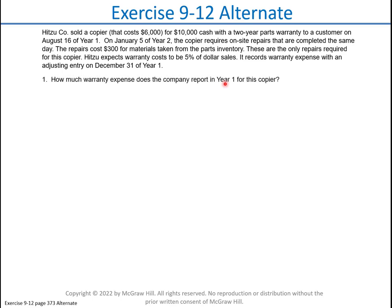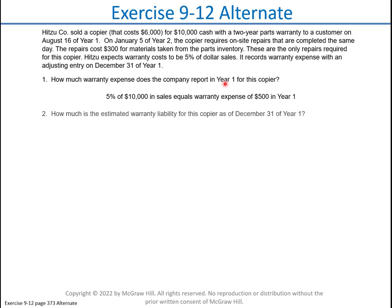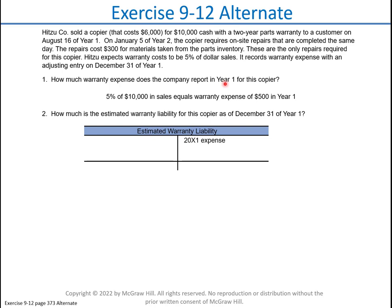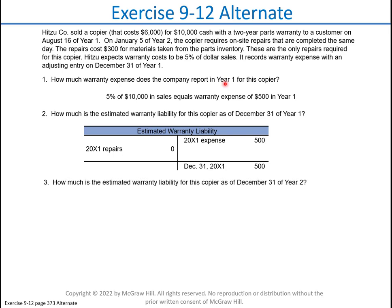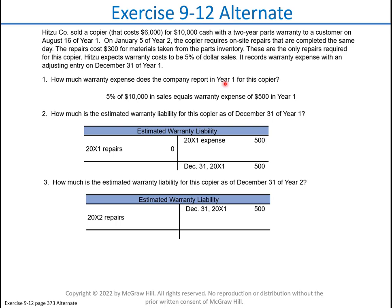The first question: how much warranty expense does the company report in year one? It would be $10,000 times five percent, which equals $500. How much warranty liability will be recorded in the first year? Since no repairs have been made yet, $500 is the answer. For the estimated warranty liability at the end of the next year, they paid out $300 in repairs, so the balance is down to $200.